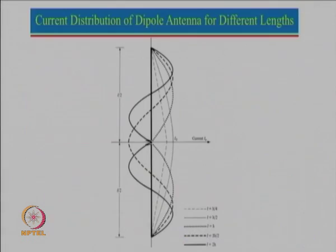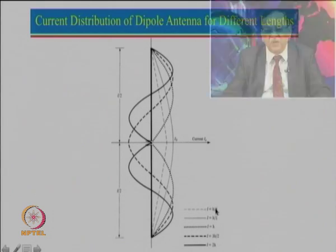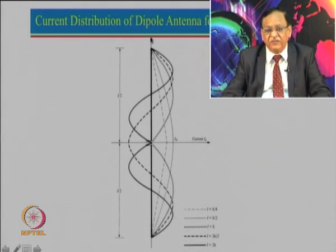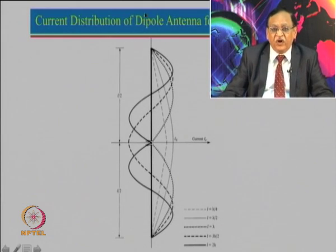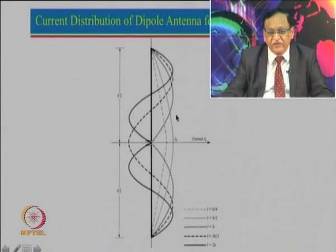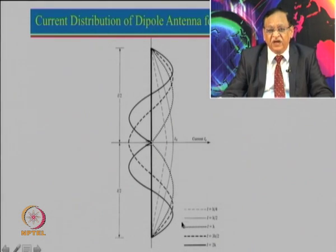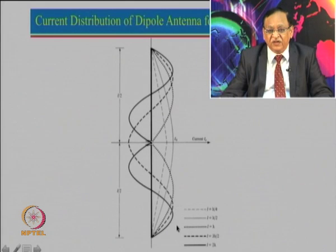Let us see the current distribution for different dipole lengths. For a total dipole length of λ/4, the half-length is λ/8, which is still approximated as a triangular distribution. When the length is λ/2 the half-length is λ/4, giving a sine wave going from 0 to maximum and back to 0. For length equal to λ, there is a half-wavelength variation on each side. Practically, we do not use dipole antennas much larger than the wavelength.